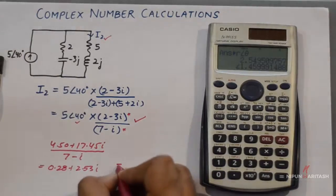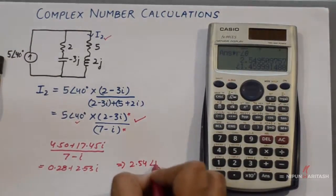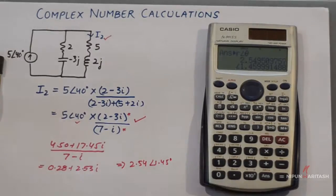So the current in the second branch comes out to be 2.54 angle 1.45 degrees.